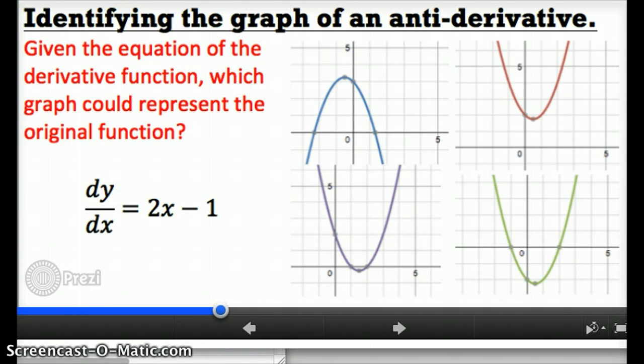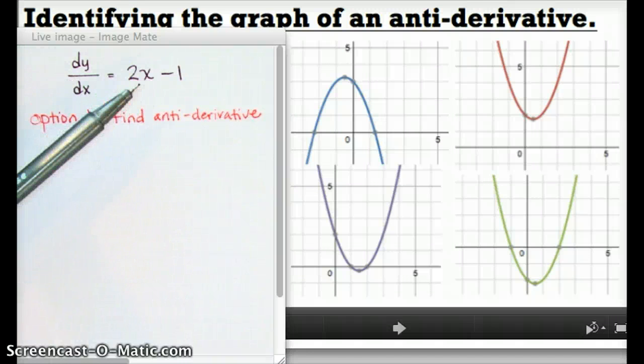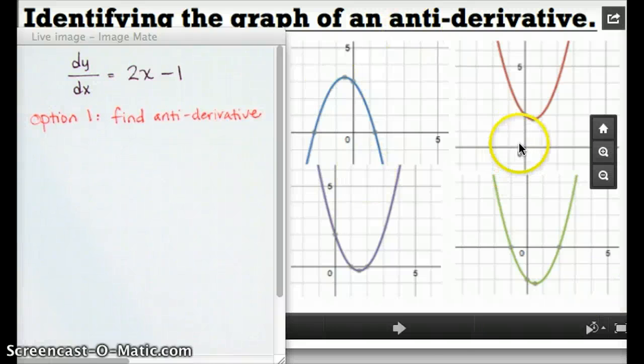So it turns out there's actually a couple different ways you could have tackled that. I'm guessing that most of you probably tried to find an antiderivative. And maybe you realized that since this is a linear function, if the derivative is a linear function, the original function must have been a parabola, second degree. That makes sense because all of these graphs are parabolas. Maybe you even took an extra step and found the algebraic antiderivative, which, if you think about what we did last unit, would be x squared minus x.